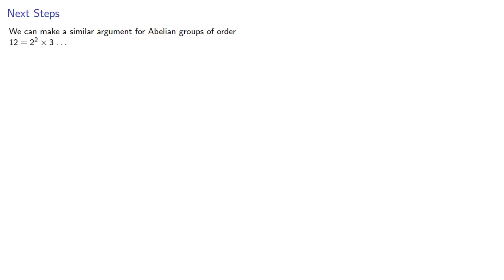Now, we can make similar arguments for abelian groups of order, say, twelve, which is two to the second times three. But how do we know such a group can be non-cyclic? We'll need to introduce a new idea.